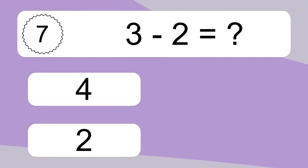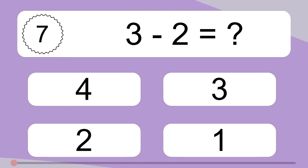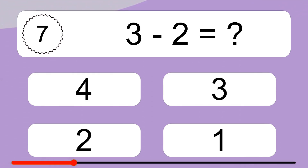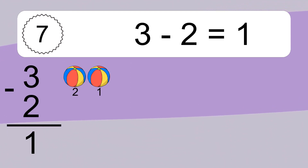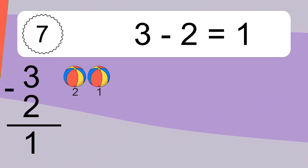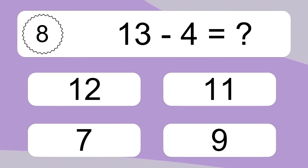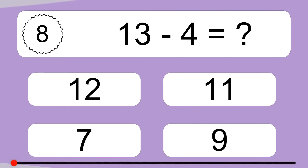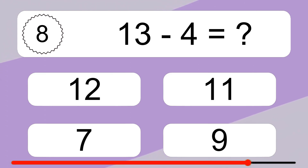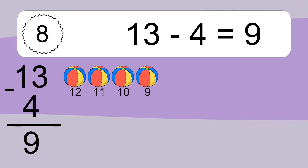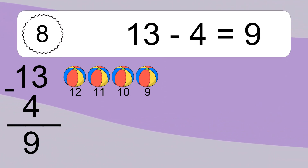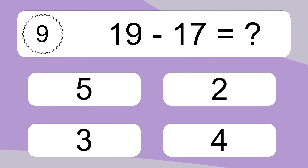3 minus 2 equals what? 3 minus 2 equals 1. Let's count it: 2, 1. 13 minus 4 equals what? 13 minus 4 equals 9. Let's count it: 12, 11, 10, 9.